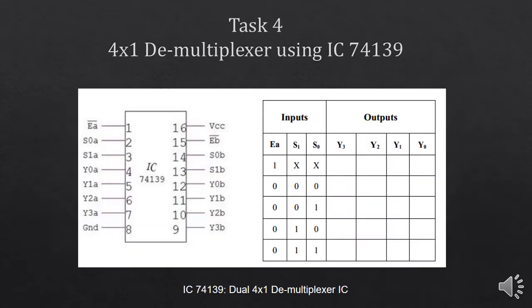Lab task number four is to implement a 4x1 demultiplexer using the 74139 IC. This is the pin configuration of the IC. Implement this circuit and verify your results. When the enable pin is high no data will be transferred; when the enable pin is 0 the data will be transferred to the output, as it works on inverted logic.